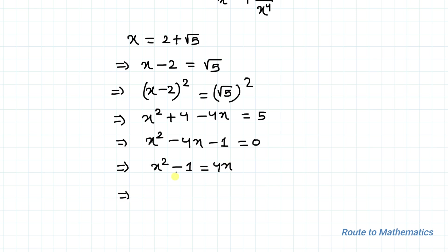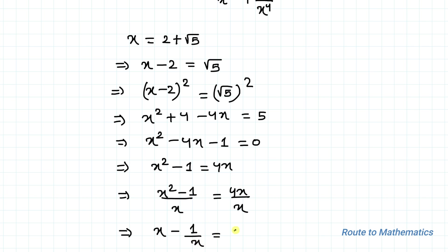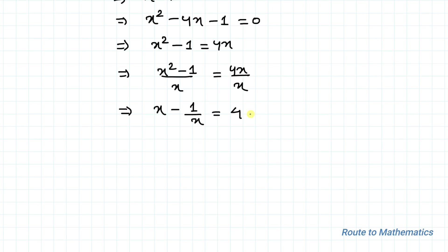Dividing both sides by x we have (x² - 1)/x = 4, which simplifies to x - 1/x = 4. Let's take this as Equation 1.